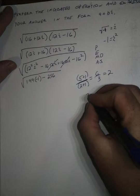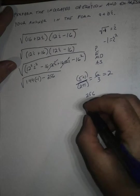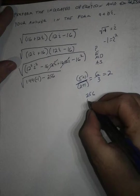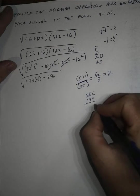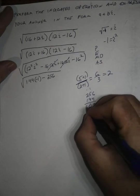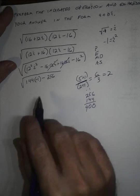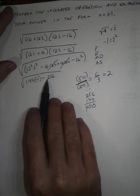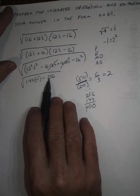So negative 256 minus 144. It looks like it's going to be 400, but I'm going to write it here to check, just to make sure. 256 plus 144. Zero carry the one, zero carry the one. Yes, 400. But these are both negative numbers. So negative plus negative is negative. You add the absolute values. Keep the negative sign.